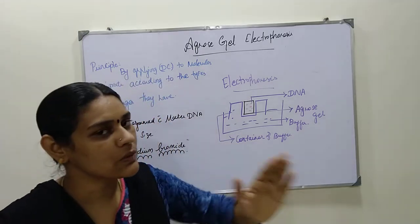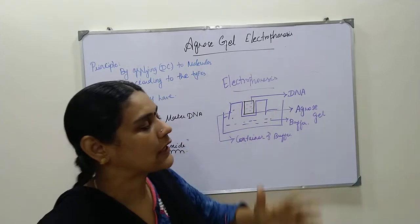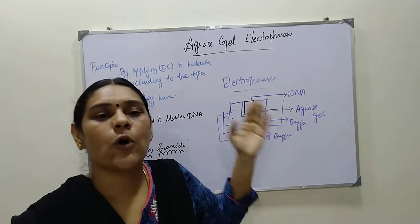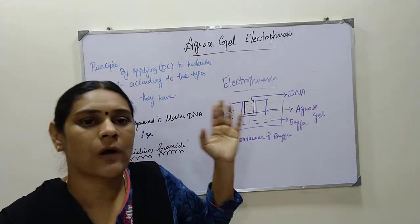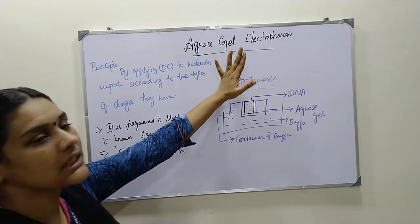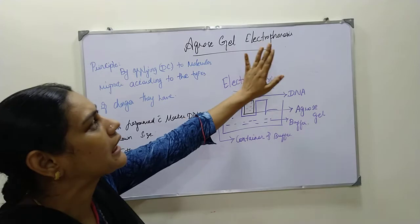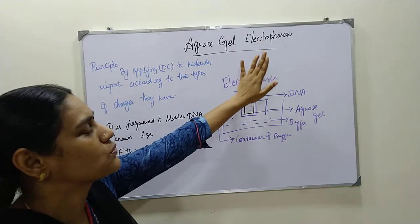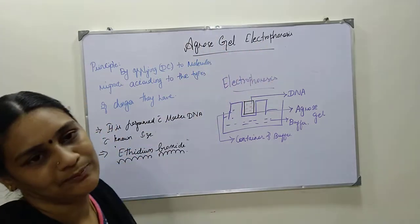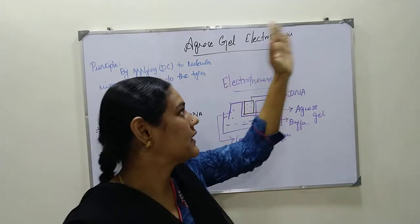But from today onwards we are going to discuss about the agarose gel electrophoresis technique. This is a technique, or it is also called a method. This is actually a gel, and by using the gel we are going to run the electrophoresis — that is, we are going to run the current on the gel.